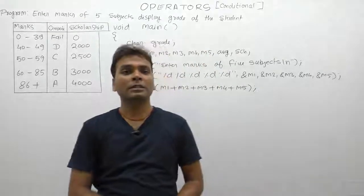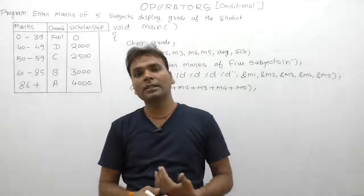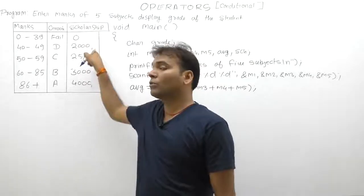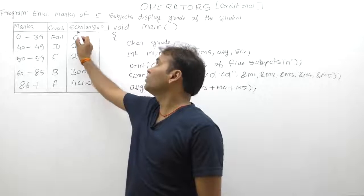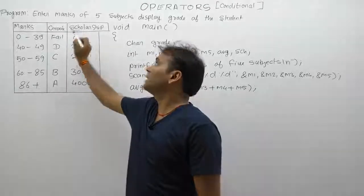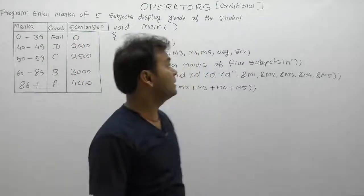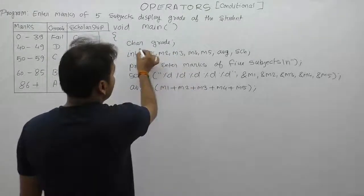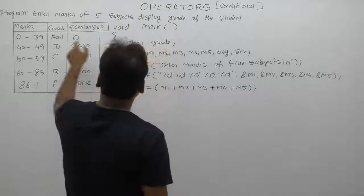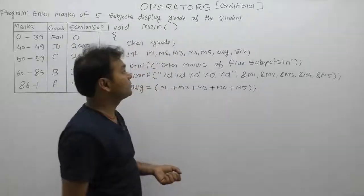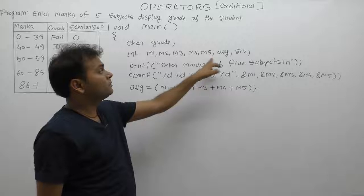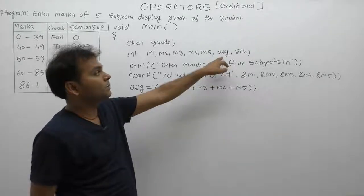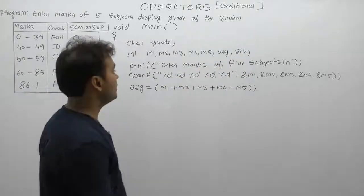Just like the previous case conditions where we only assigned grade, here we also need scholarship. An extra variable is required to store the scholarship, something like sch. Therefore, we are declaring eight variables here. First of all, grade of character type to manage grade in the form of characters. Next, five marks: m1, m2, m3, m4, m5. Then variables for storing average and scholarship.